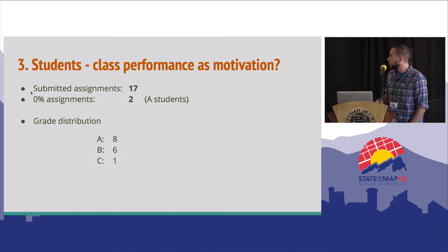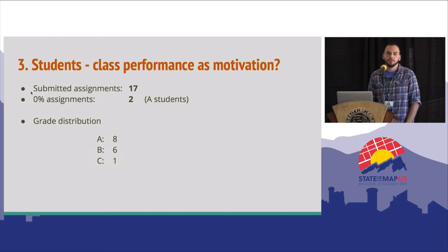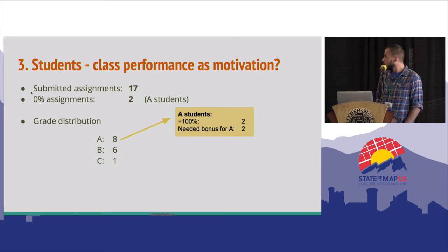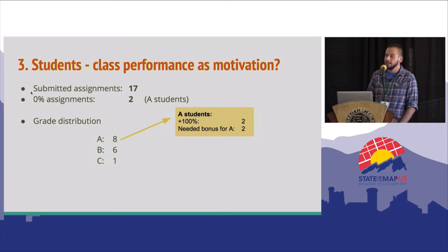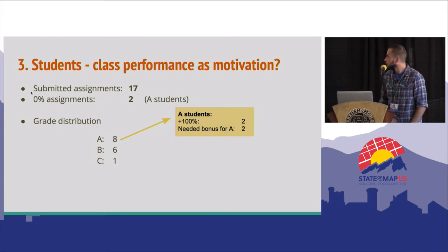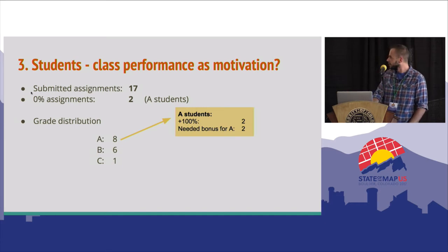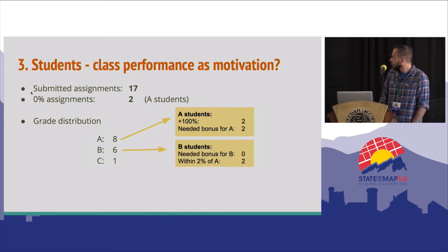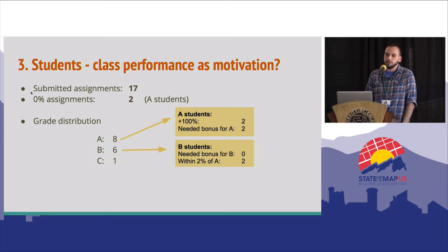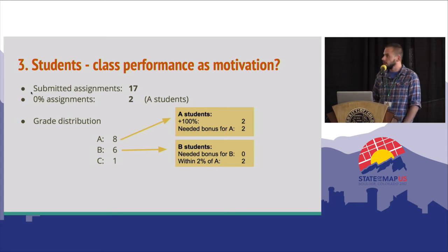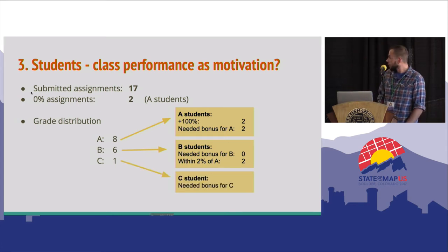The grade distribution was interesting — my idea was that it would be students who needed the extra 5%, but that's not necessarily the case. Eight of the assignments are from students who already had an A, and only two of them needed the extra 5% to reach an A grade by end of semester. Two students achieved more than 100% in the class because of the extra credit, which is pretty cool. Out of the B students, no one needed the extra credit to get a B — they tried to get up to an A. And for the one student who received a C, he really needed this extra 5%.